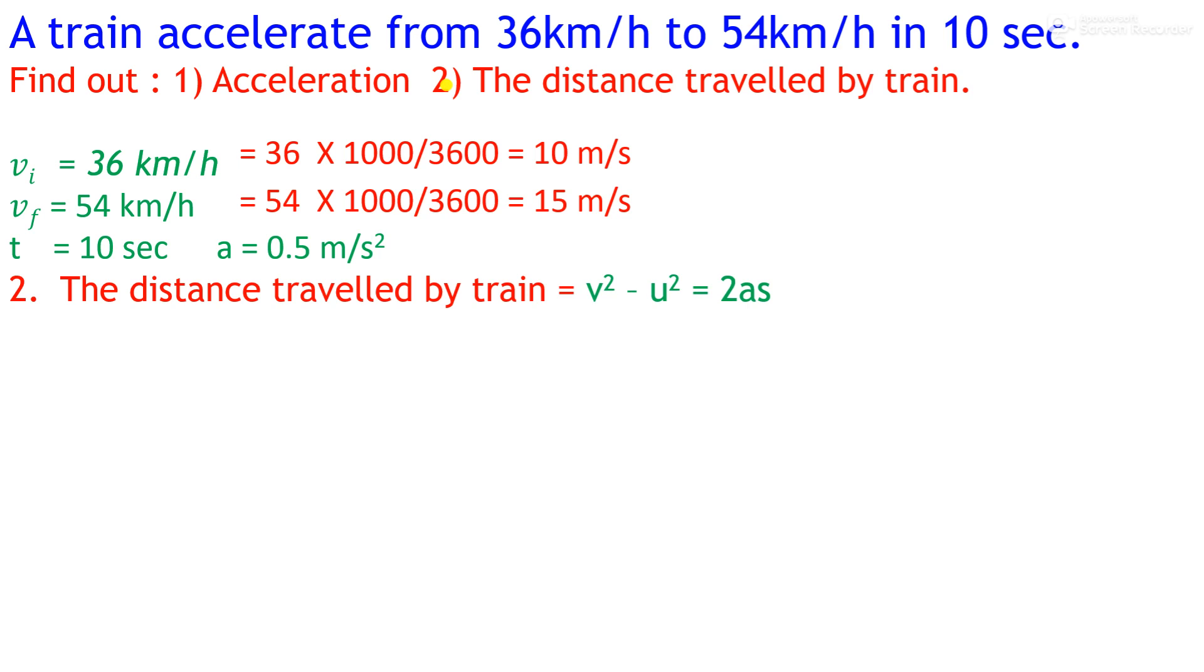One formula is v² - u² = 2as, and another formula is s = ut + ½at². Simply put the values in v² - u² = 2as. We will get (15)² - (10)² = 2 × 0.5 × s, which gives us 225 - 100. By solving this, we get s = 125 meters.